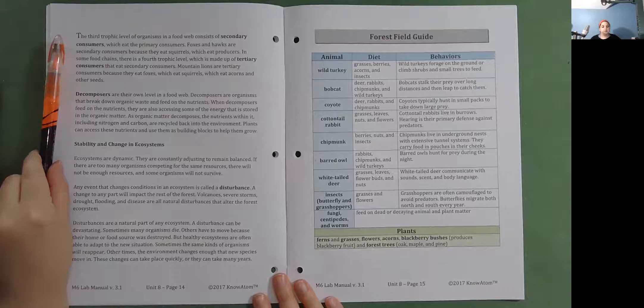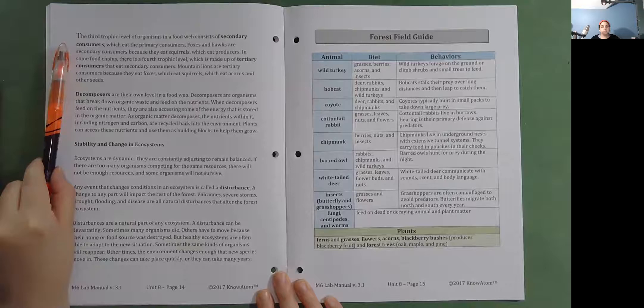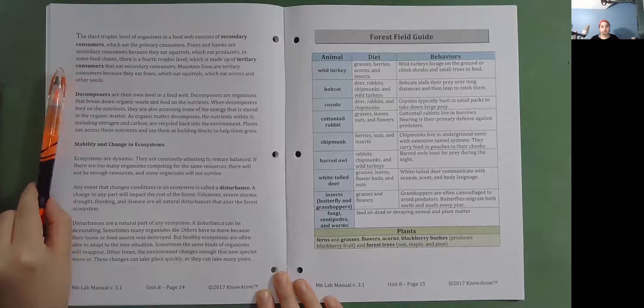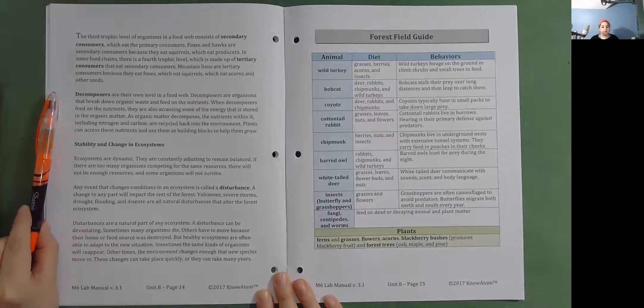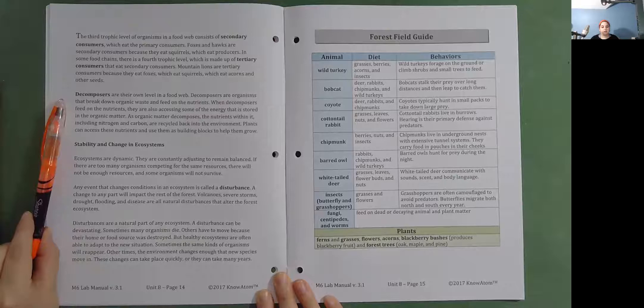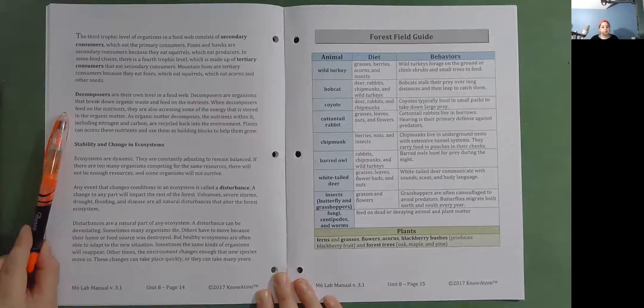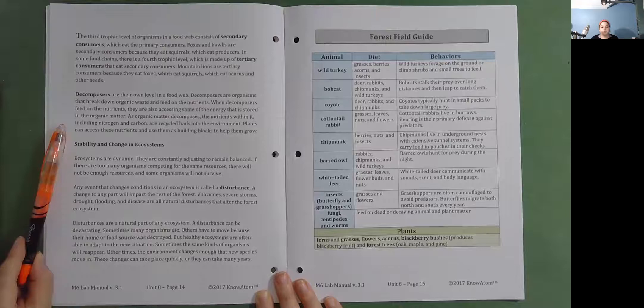The third trophic level of organisms in a food web consists of secondary consumers, which eat the primary consumers. Foxes and hawks are secondary consumers because they eat squirrels, which eat producers. In some food chains, there is a fourth trophic level, which is made up of tertiary consumers, that eat secondary consumers. Mountain lions are tertiary consumers because they eat foxes, which eat squirrels, which eat acorns and other seeds. Decomposers are their own level in a food web. Decomposers are organisms that break down organic waste and feed on the nutrients. When decomposers feed on the nutrients, they are also accessing some of the energy that is stored in organic matter. As organic matter decomposes, the nutrients within it, including nitrogen and carbon, are recycled back into the environment. Plants can access these nutrients and use them as building blocks to help them grow.